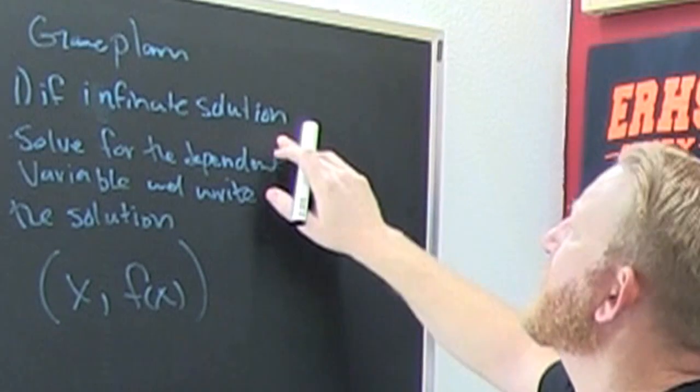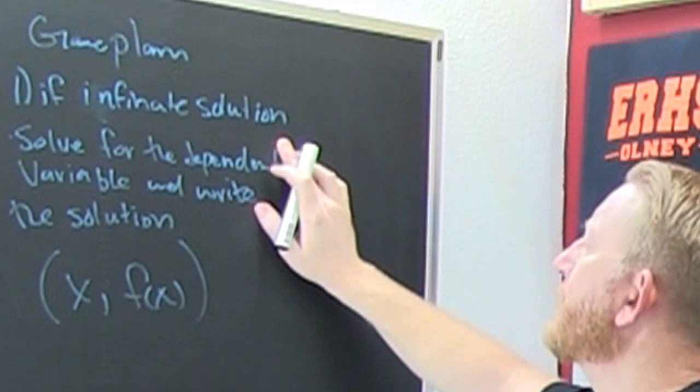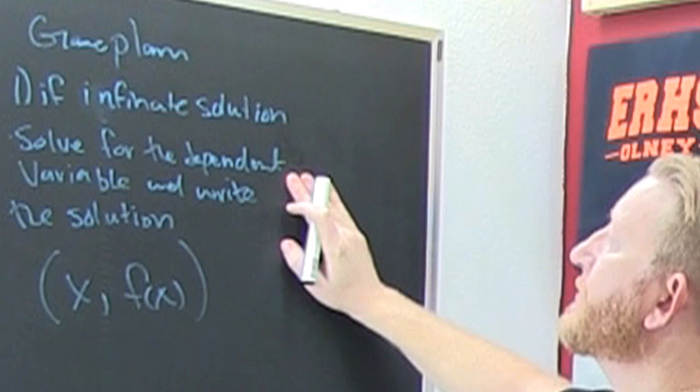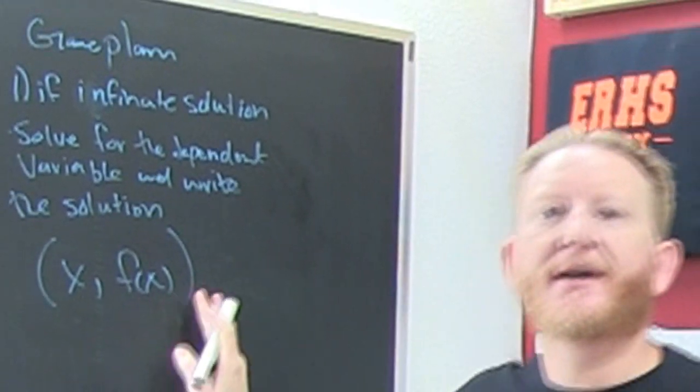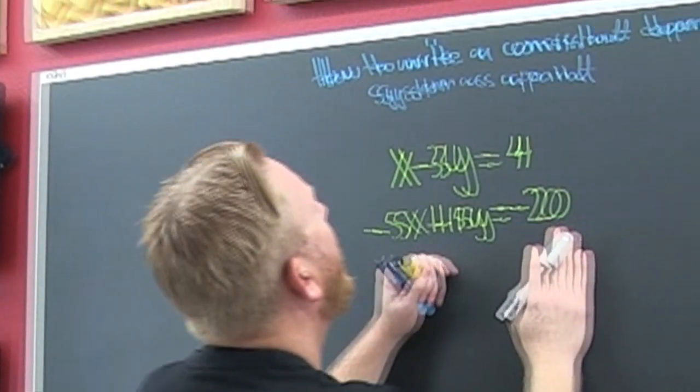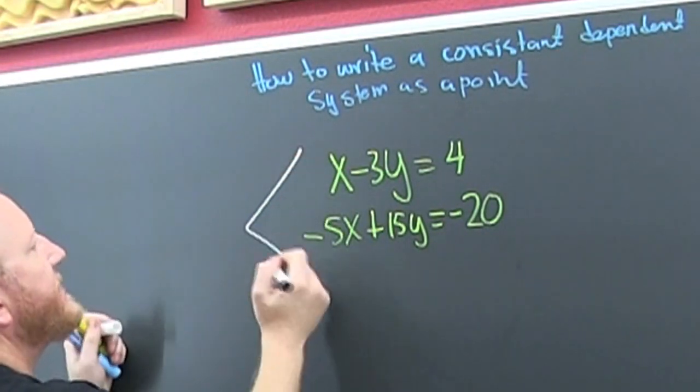If you find out it has infinite solutions algebraically or whatever, then solve for the dependent variable and write the solution as a point. I know it sounds simplistic, but what do we have here? Well, these are the same system.